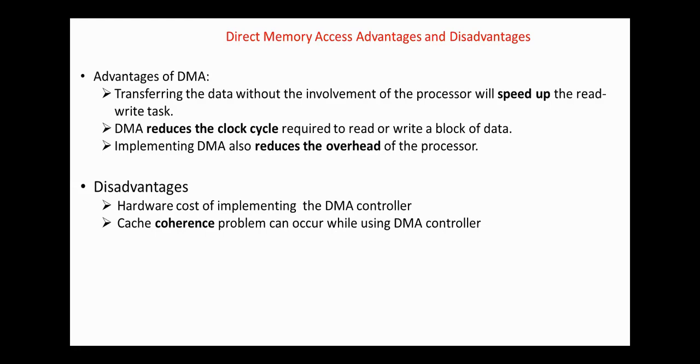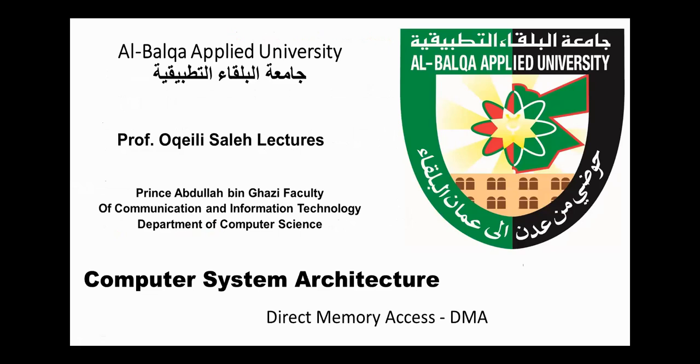The disadvantages are the hardware cost of implementing the DMA controller and cache coherence problems that can occur while using the DMA controller. Cache coherence occurs when a DMA transfer changes the content of main memory that has been previously cached by the processor. Compared to other modes of transfer, programmed I/O and interrupt-initiated I/O, DMA is more efficient for transferring large amounts of data.